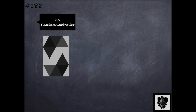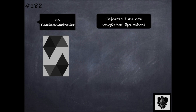The time lock controller library provides functions for enforcing time locks, which are time-delayed operations. If there are operations that need to be executed only after a certain window of time delay has passed, that is referred to as a time lock. The library provides various functions to enforce time locks on only-owner operations. Only owner refers to the modifier for access control which, when applied to functions, allows only the owner of that smart contract to execute that function. This becomes really critical from a security perspective because only-owner functions are used to make changes to critical parameters of a protocol.